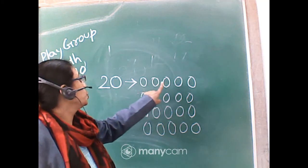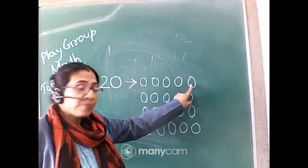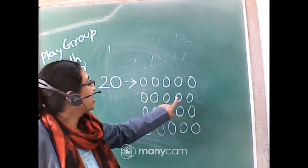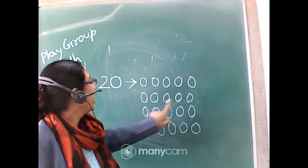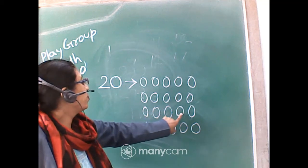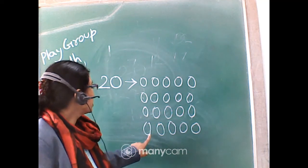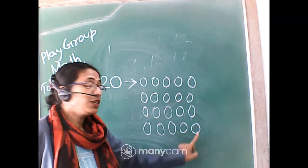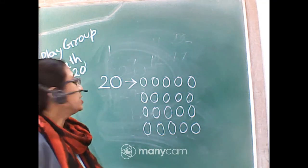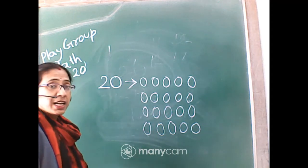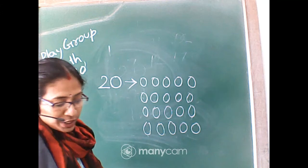Count: 1, 2, 3, 4, 5, 6, 7, 8, 9, 10, 11, 12, 13, 14, 15, 16, 17, 18, 19, 20. So this way we draw circles or count 20 numbers.